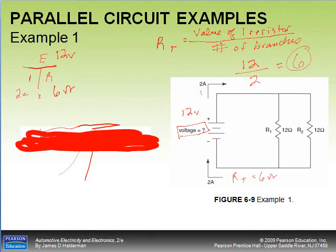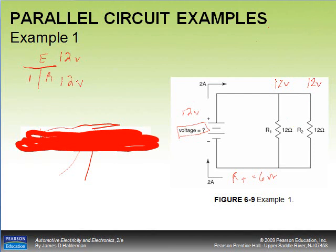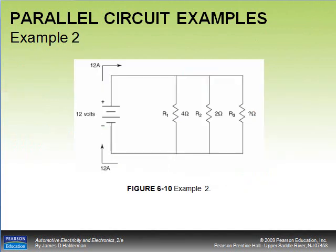We can verify by branch currents. Voltage across each branch is the same — 12 volts. Using Ohm's law: 12 volts divided by 12 ohms gives 1 amp per branch. One amp plus one amp equals 2 amps total, confirming our answers are correct.